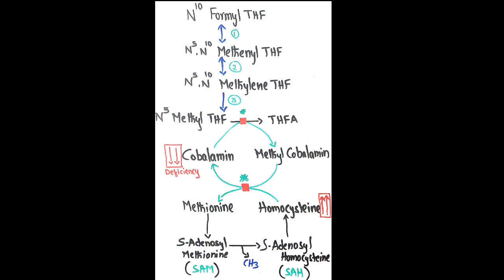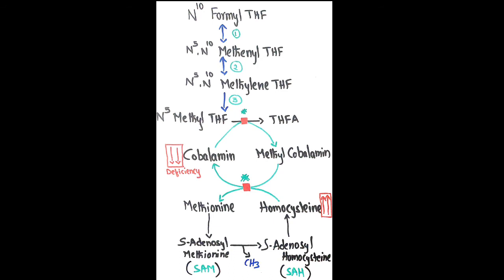These one-carbon units can interconvert among themselves, except for one irreversible step. Formyl-THF is converted to methanol-THF, methanol-THF is converted to methylene-THF, and methylene-THF is irreversibly converted into methyl-THF. The first two conversions are reversible, but once methylene-THF is converted into methyl-THF, it cannot be reconverted back into the other three forms.